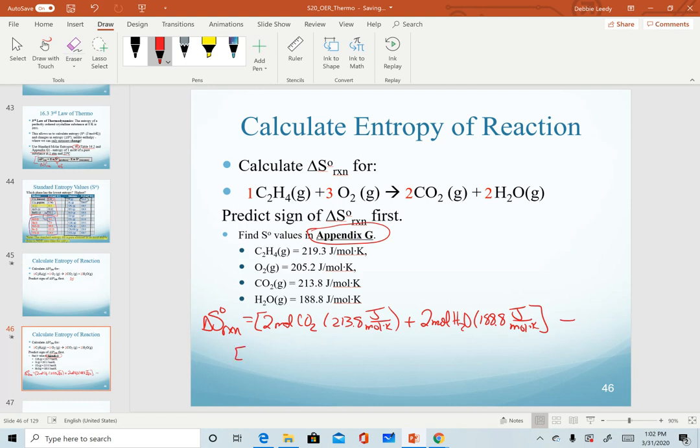And I'm going to subtract from that my reactants. So one mole of the C2H4 times its value. And notice in this case that we do have a value for oxygen. Again, entropies can never be zero. So we will have a value of entropy for every substance.